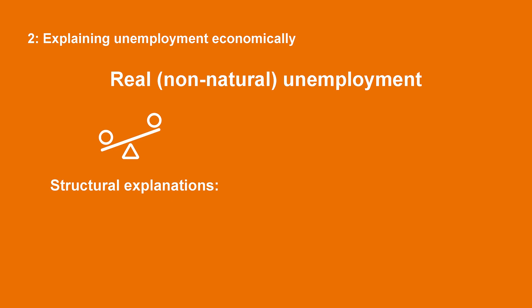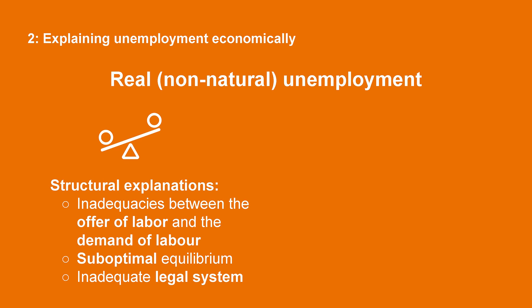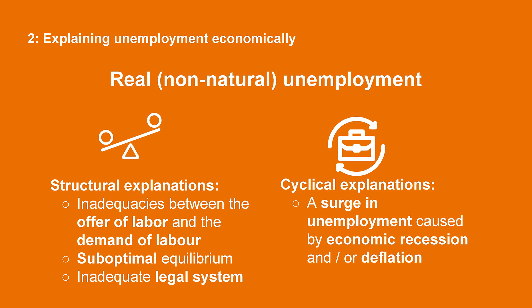Then there is real, that is, non-natural, unemployment. One can distinguish between two broad types of explanations. One type is structural explanations. For instance, there could be inadequacies between the supply of labour and the demand for labour, or a suboptimal equilibrium with initially insufficient demand for goods, or inadequate legal systems — for instance, according to classical analysis, minimum wage laws, which we will come back to. A second type is cyclical explanations — for instance, a surge in unemployment caused by an economic recession or deflation.